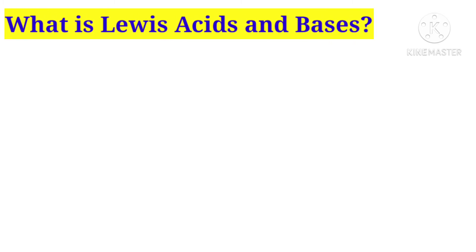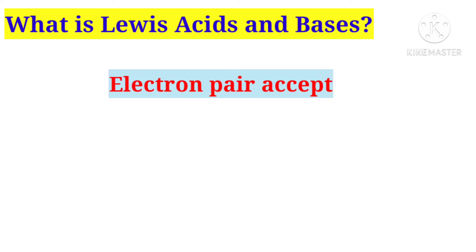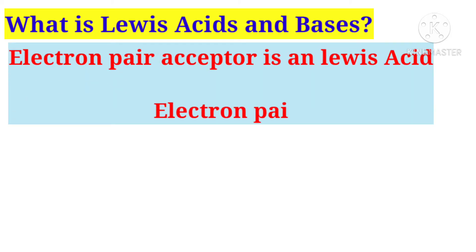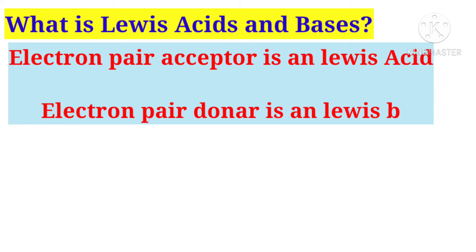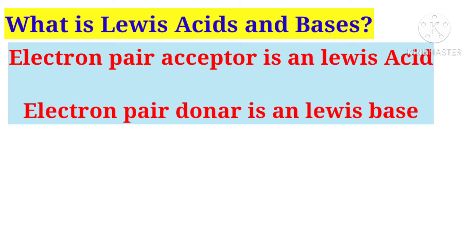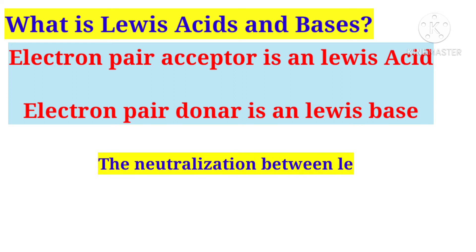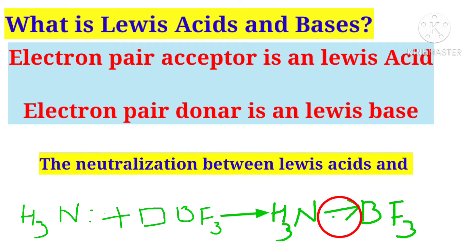What is Lewis acids and bases? An electron pair acceptor is a Lewis acid and an electron pair donor is a Lewis base. The electron pair means two electrons. Accepting an electron pair is called Lewis acid and electron pair donor is called Lewis base. The neutralization between Lewis acid and bases is due to the formation of a coordinate covalent bond.